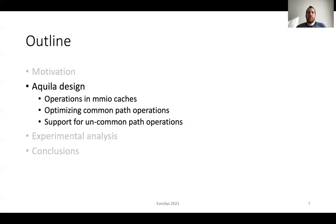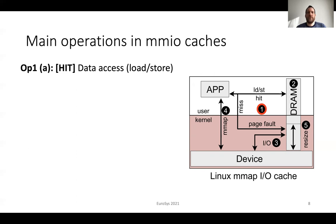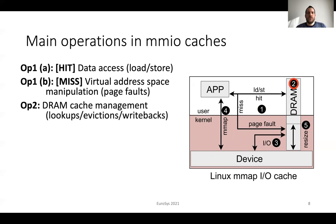Now I'm going to provide more details about the design of Akila. We observe that cache management with memory mapped IO requires several distinct operations. The first operation during the hit path uses load/store instructions that are handled entirely in hardware through the memory management unit. For this reason, the hit path does not result in any software overheads. On the other hand, the miss path requires virtual address space manipulation which also includes page faults. The second operation includes DRAM cache management in the case of a miss: it checks if the page already exists in DRAM and also handles evictions and writebacks.